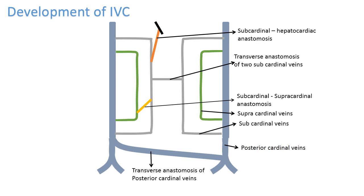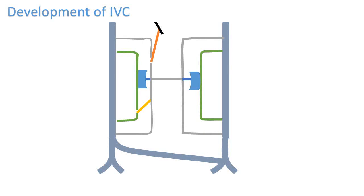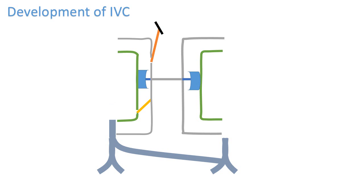This is the primary arrangement of veins in the developing fetus. As development proceeds, the posterior cardinal vein on the right side disappears, and similarly the posterior cardinal vein on the right side up to the sub-cardinal vein disappears. The sub-cardinal veins on either side will also disappear,